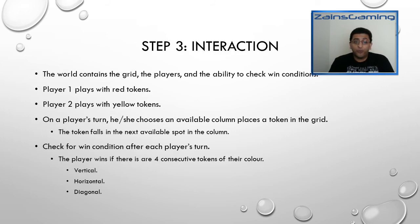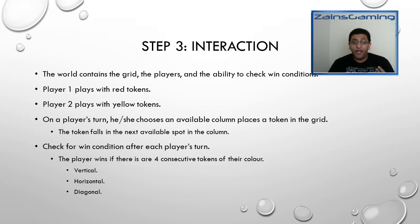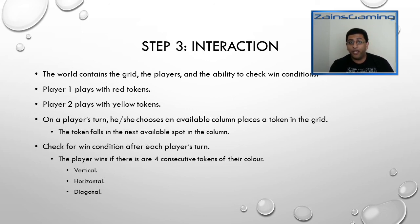How these classes are going to interact with each other is that the world is going to contain the grid, the players, and the ability to check win conditions. So the world has the game configuration and control over everything. Player one has red tokens, player two has yellow tokens, and they go in turn. On a player's turn, he or she chooses an available column to place their token in the grid, then the token falls on the next available spot in that column. At the end of the turn we check for win conditions. There are three types: a vertical win condition, horizontal, or diagonal — and diagonal can be either top-left to bottom-right or bottom-left to top-right. This is our very basic introduction plan for Connect 4.